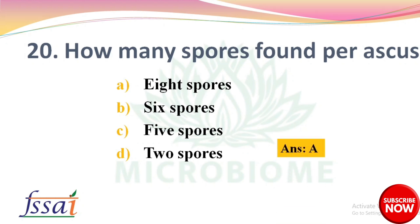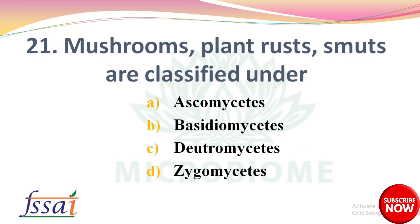Next: Mushrooms, plant rust, and smuts are classified under — options: Ascomycetes, Basidiomycetes, Deuteromycetes, Zygomycetes. The right answer is option B, Basidiomycetes. Next: Examples of osmophilic or saccharophilic bacteria — options: Deinococcus, Leuconostoc, Rhizobium, Azospirillum. The right answer is option B, Leuconostoc.